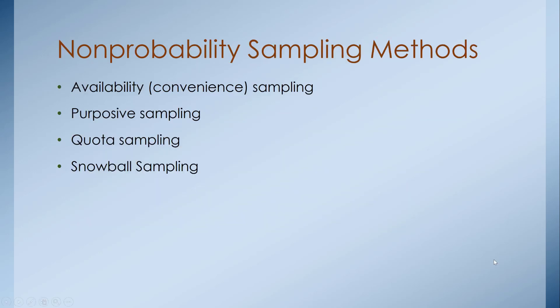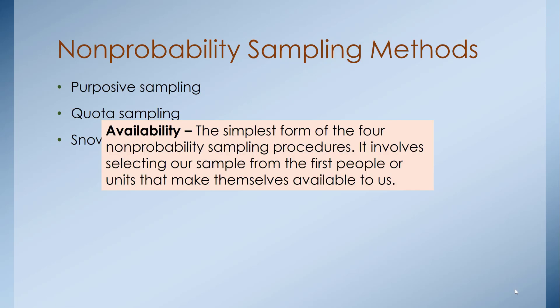Non-probability sampling methods include availability or convenience sampling, purposive sampling, quota sampling, and snowball sampling. Availability or convenience sampling is the simplest form — there are no specific characteristics required for the sample population. It's first come, first serve. For example, standing on a university corner and asking students questions about how the university is run — whoever stops by is your availability sample.